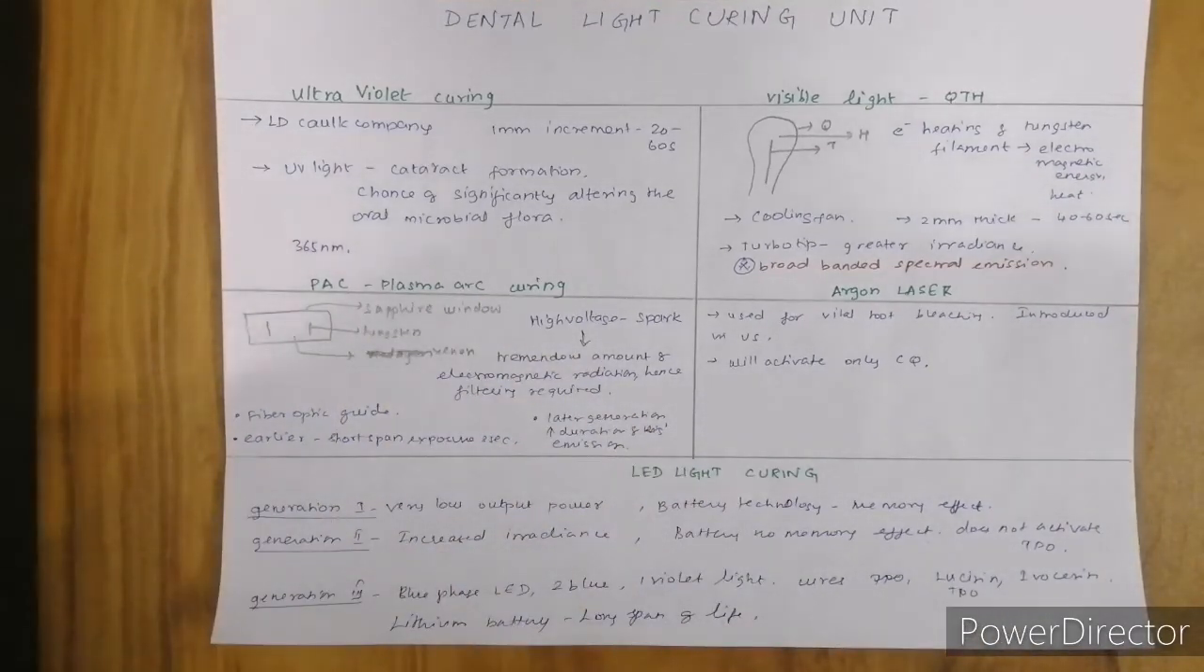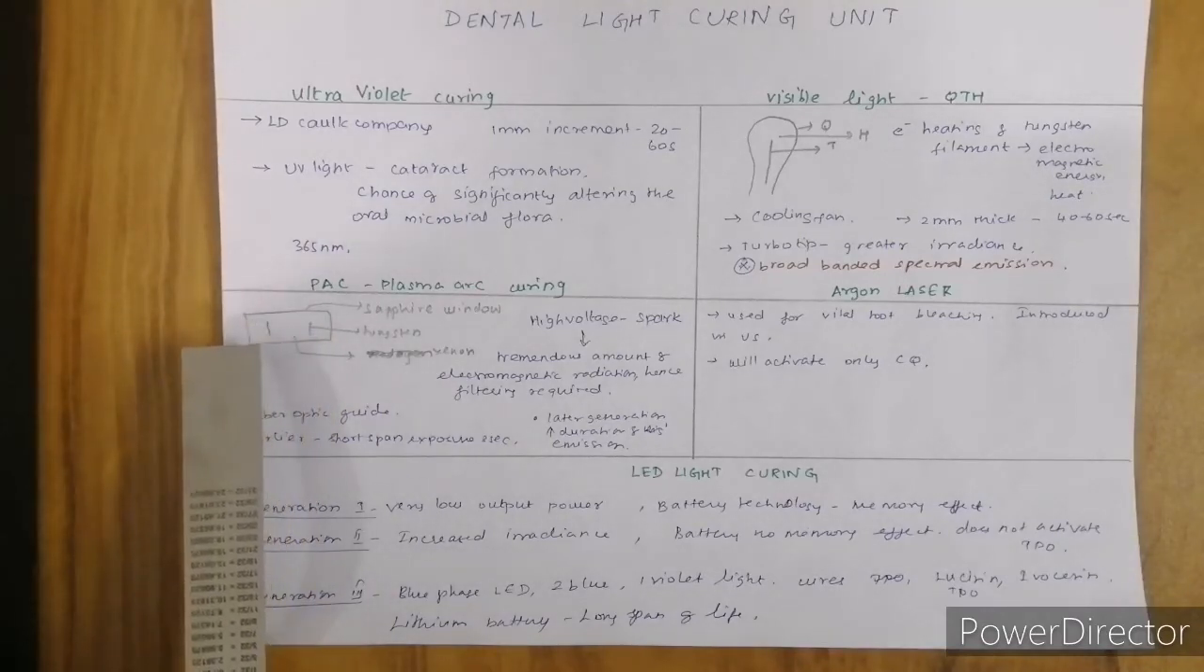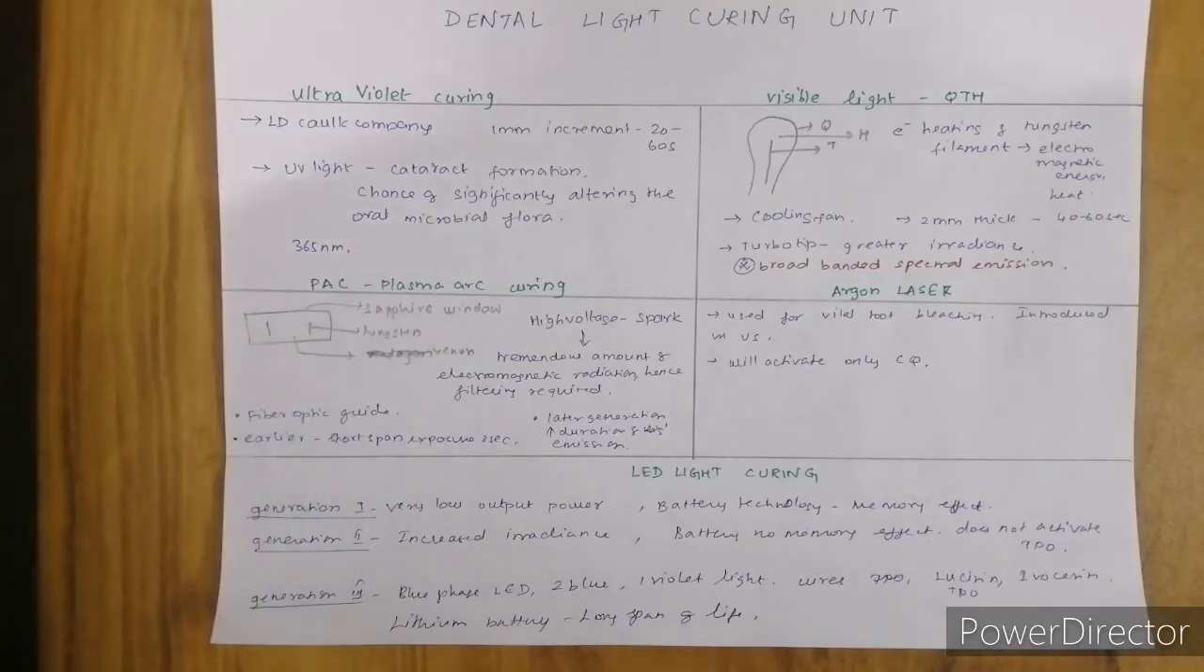Then we have plasma arc curing. Here we have a sapphire window through which radiation comes out, two tungsten filaments, and xenon gas filter.